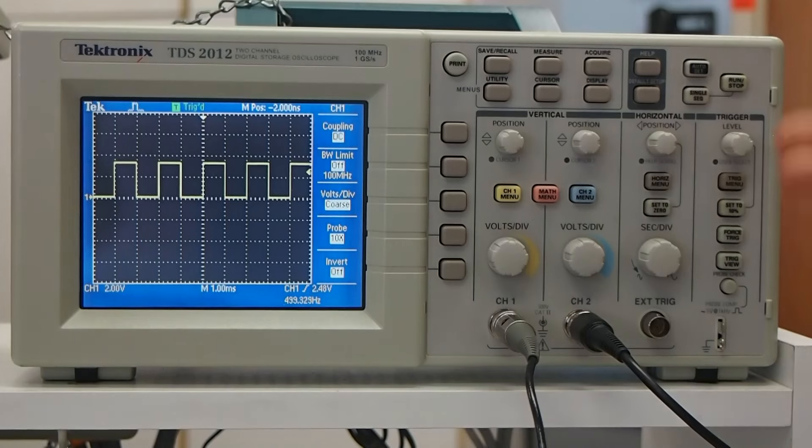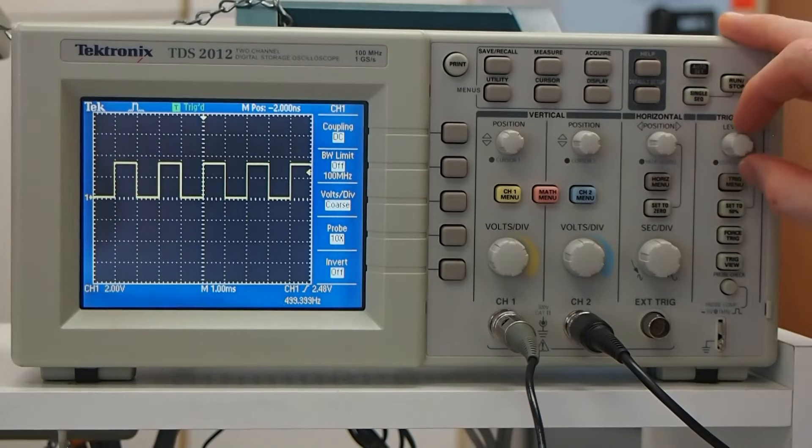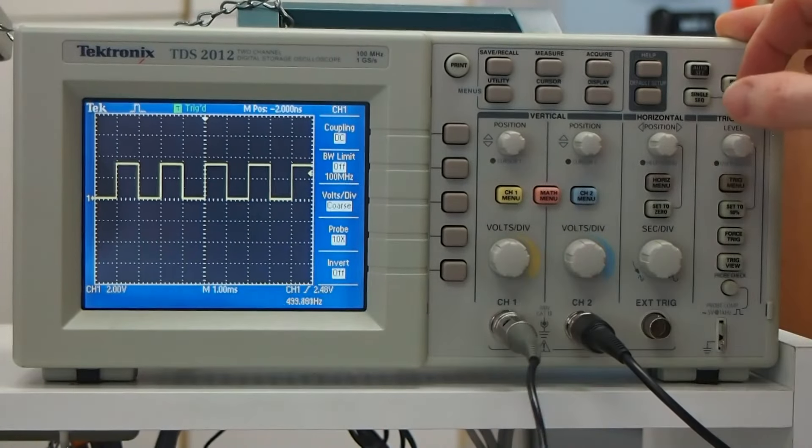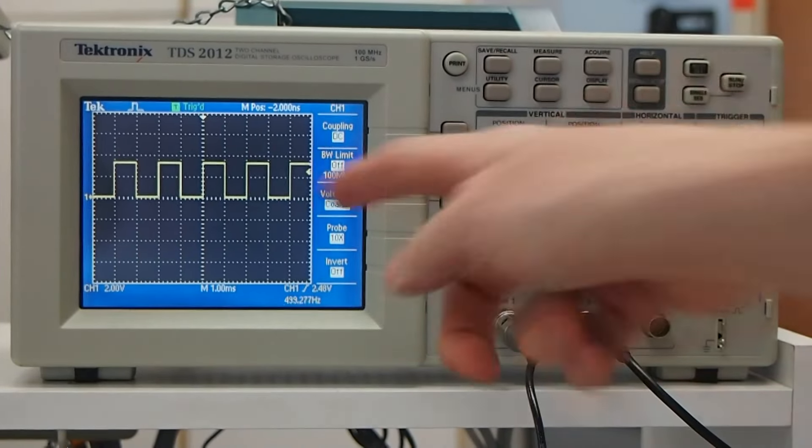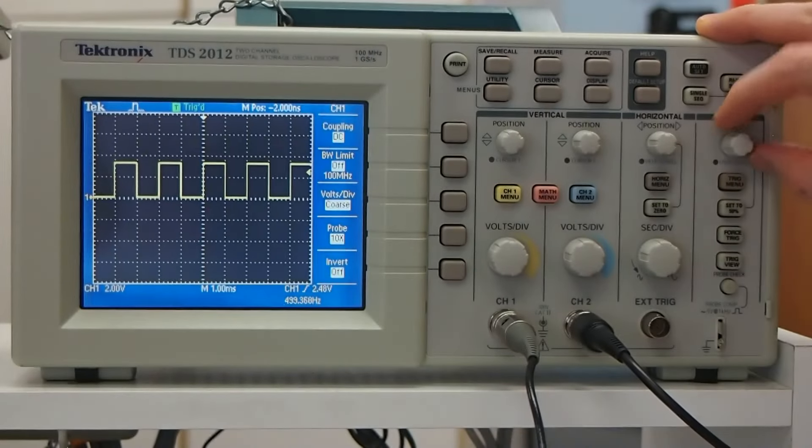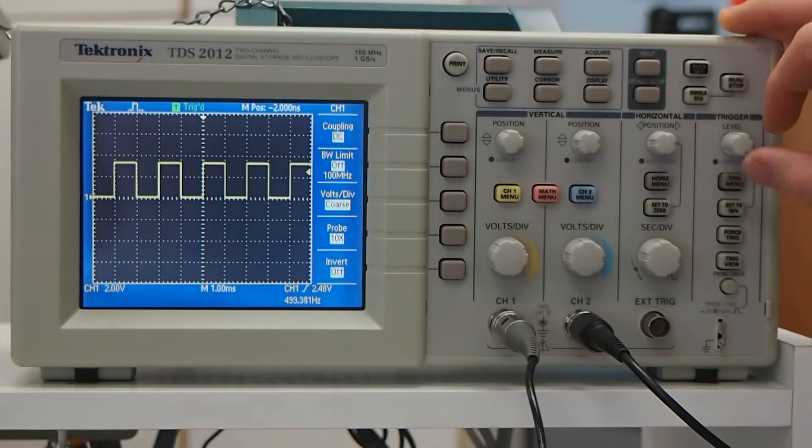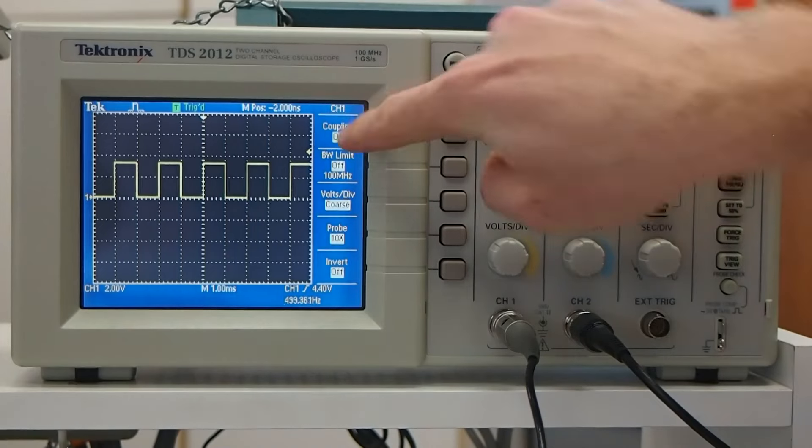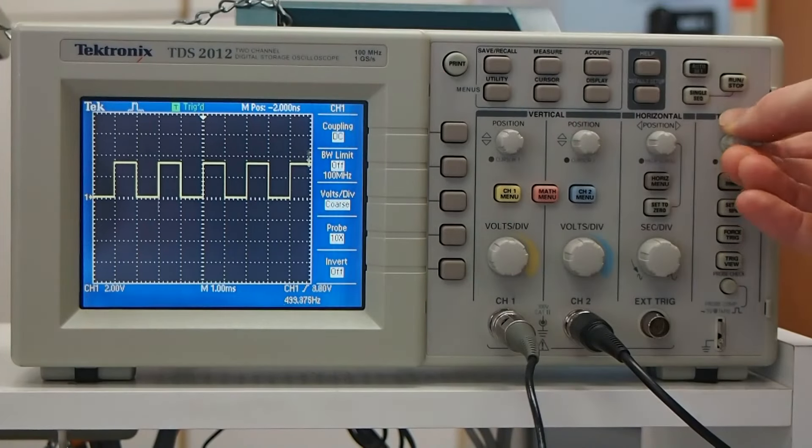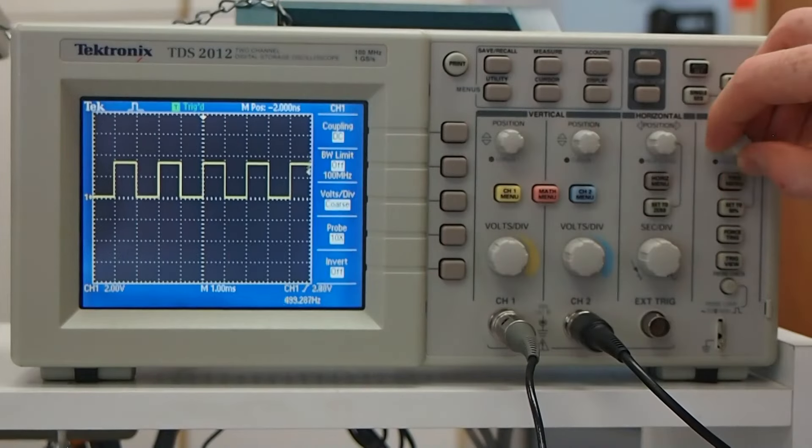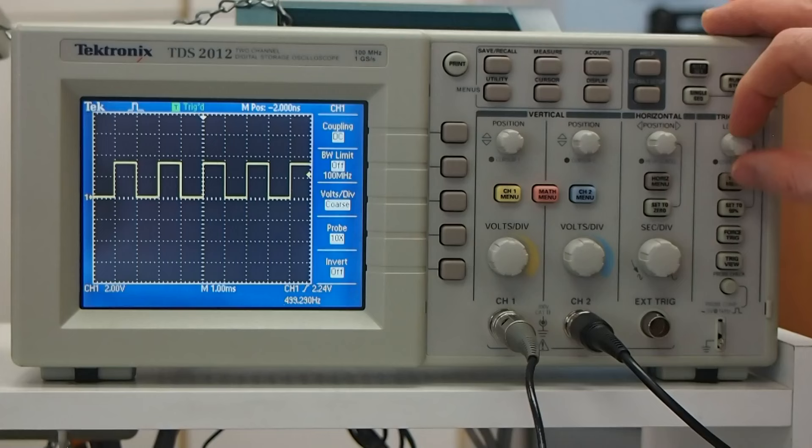And then the final column here that you'll sometimes care about is the trigger. So this signal is running really fast, and we need some way, the oscilloscope needs some way to determine what to put in the middle here. That's going to be done with the trigger. So the main trigger control, there's a level, and you'll see a little arrow on the right that is saying when the voltage rises or falls past this level, then go ahead and center that on this screen.